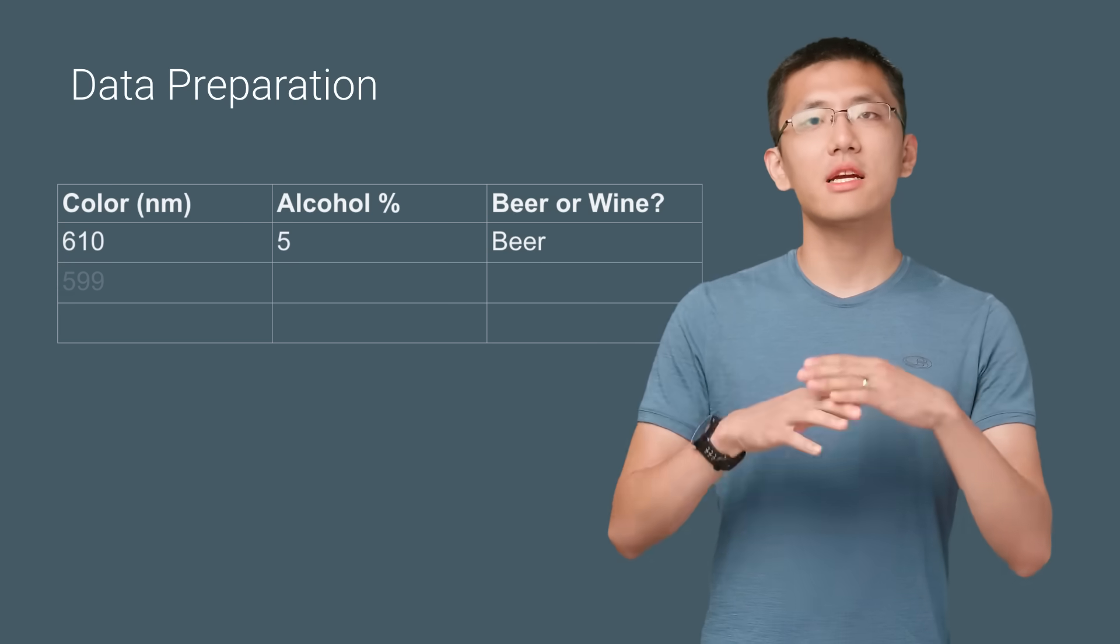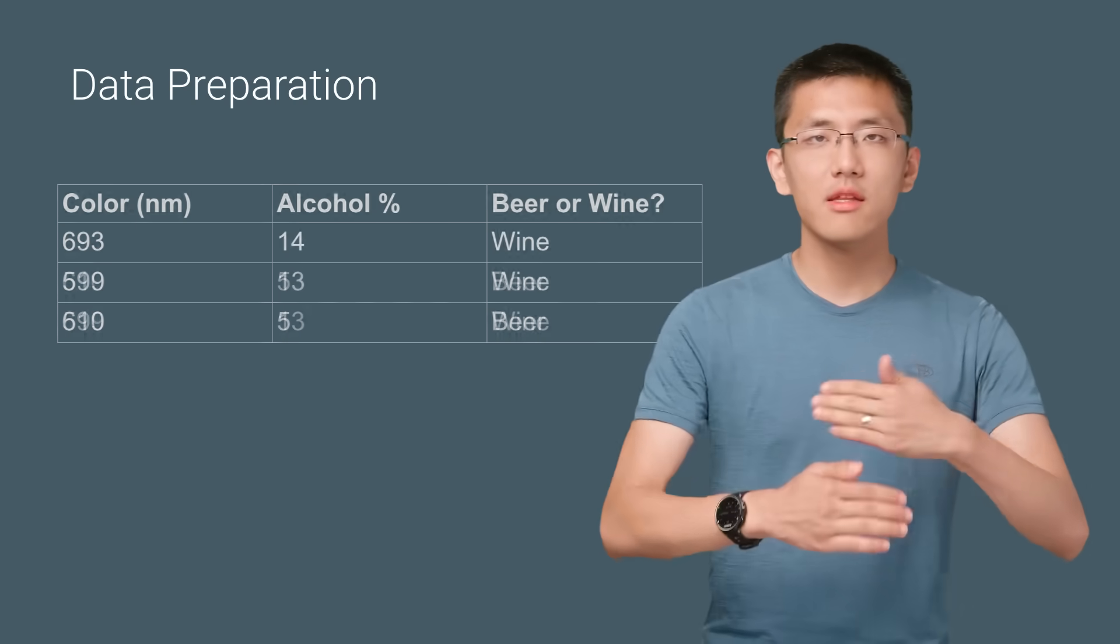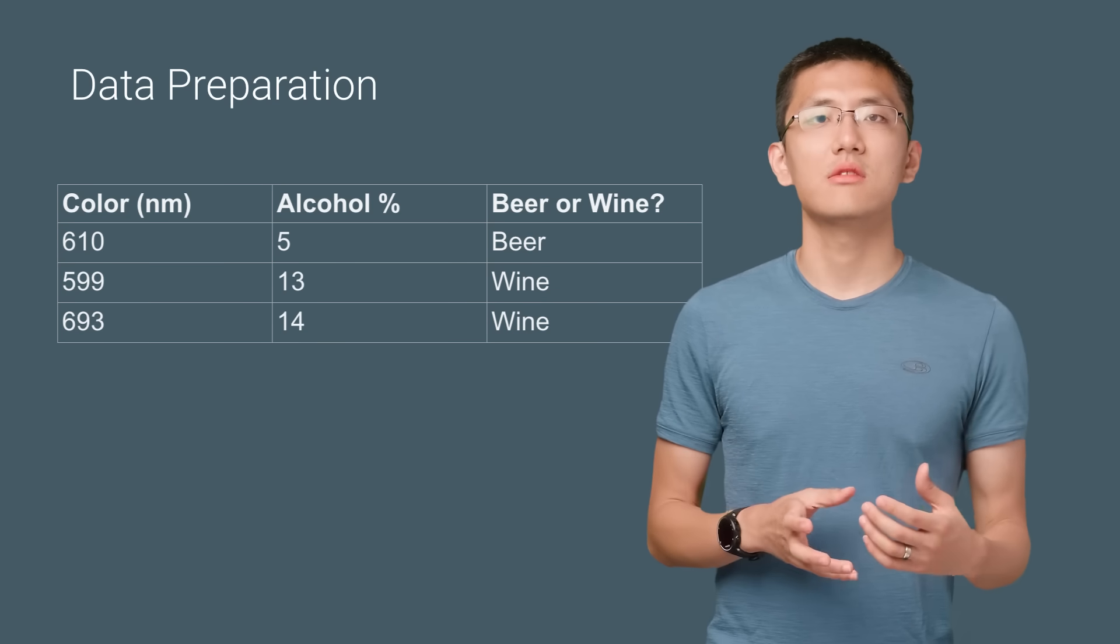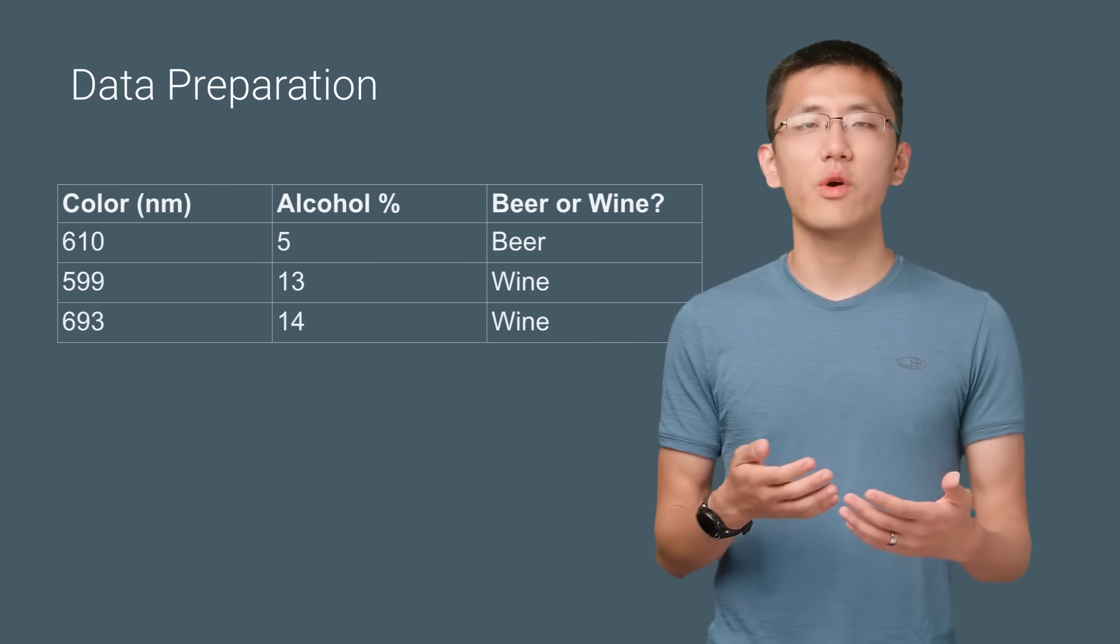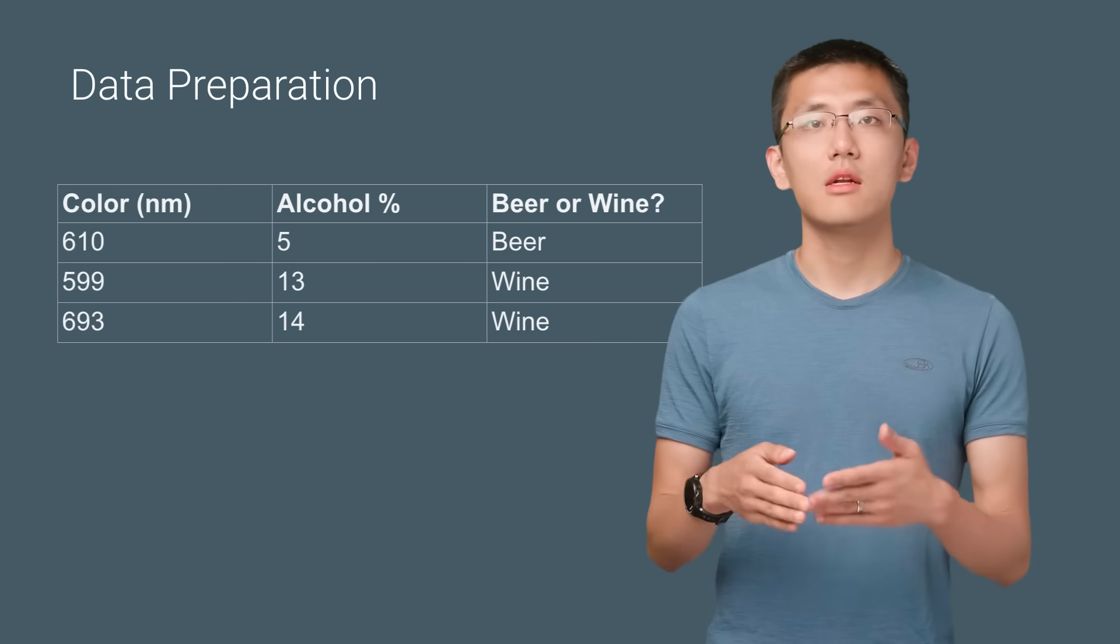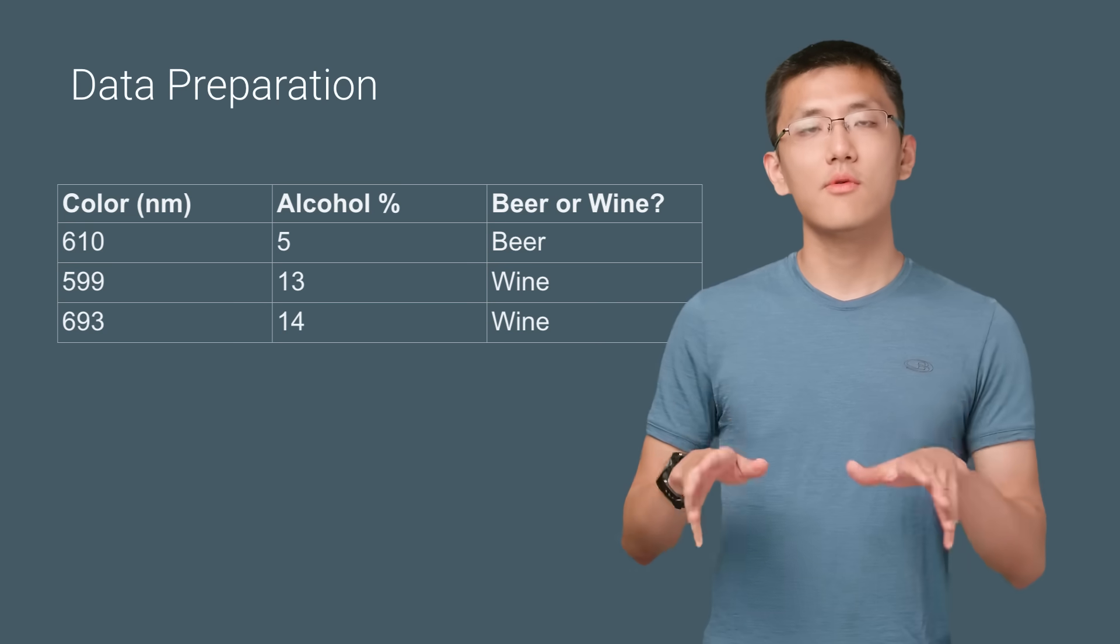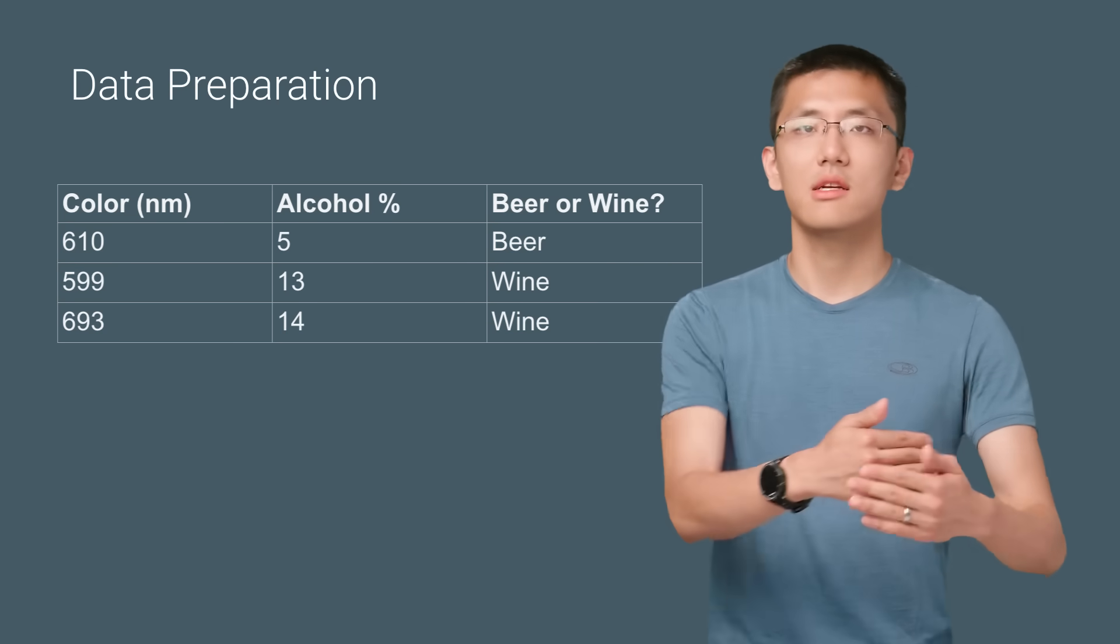We'll first put all our data together, then randomize the ordering. We wouldn't want the order of our data to affect how we learn, since that's not part of determining whether a drink is beer or wine. In other words, we want to make a determination of what a drink is, independent of what drink came before or after it in the sequence.